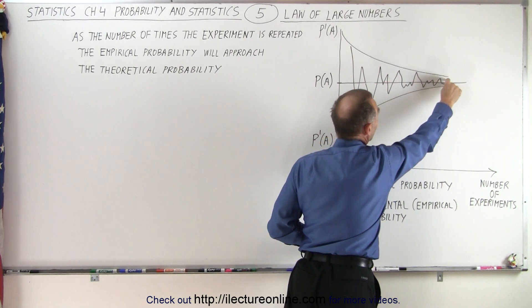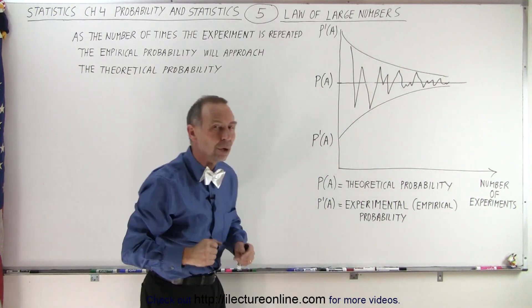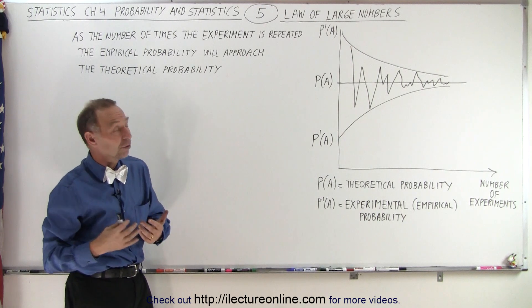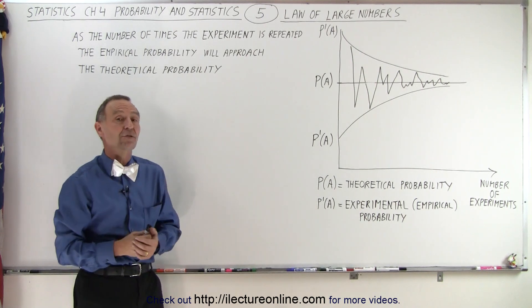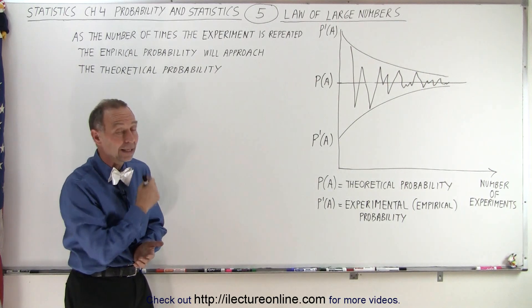Eventually you get to the point where the experimental probability will be within a very tight envelope to the theoretical probability. And so that's why it behooves us to do enough of the experiments so that the data will be reasonable and valid. And that is how we know.